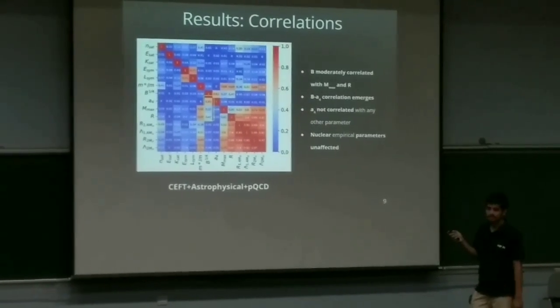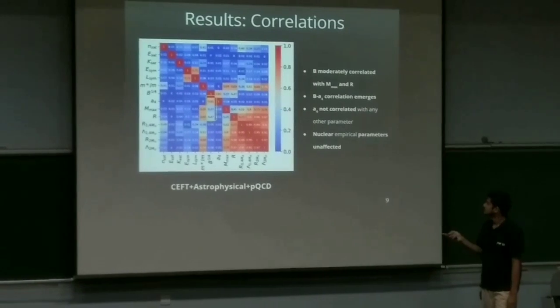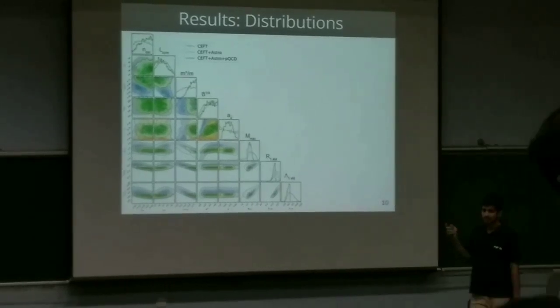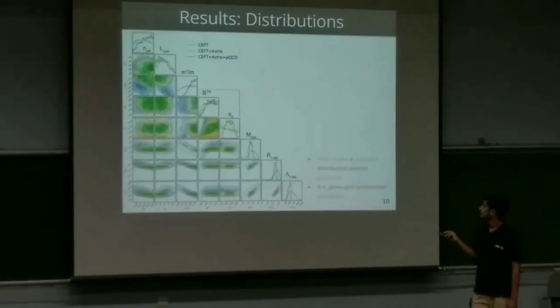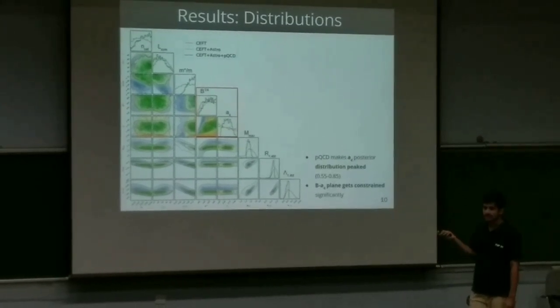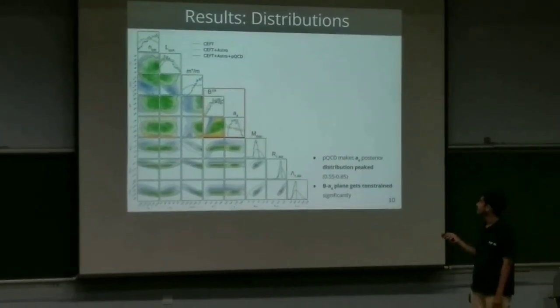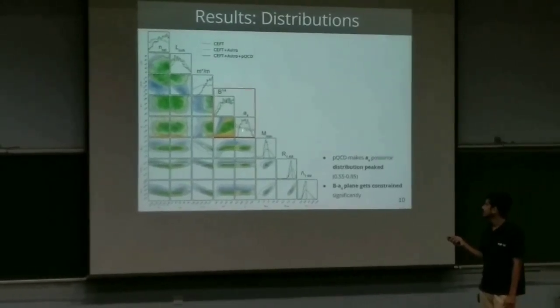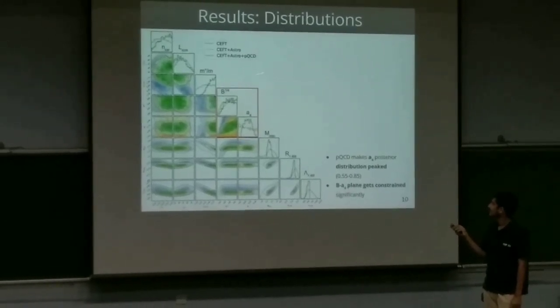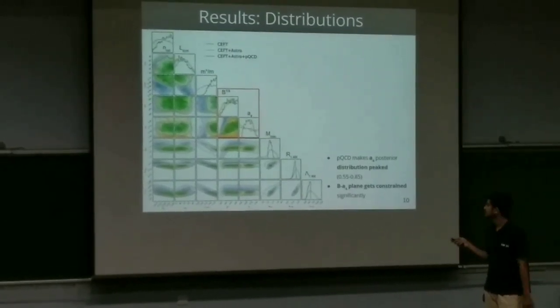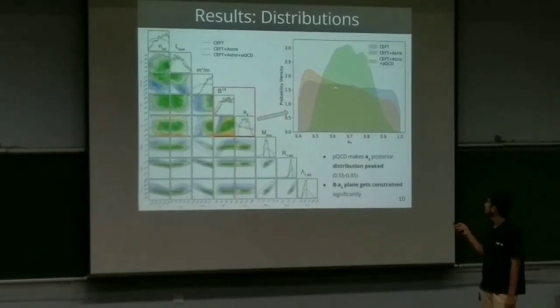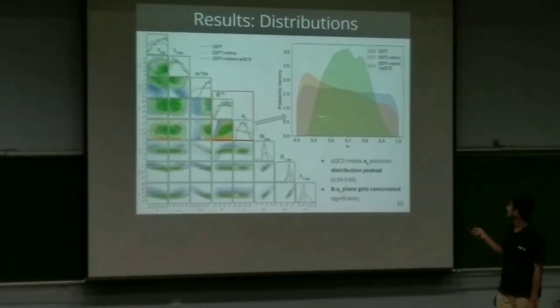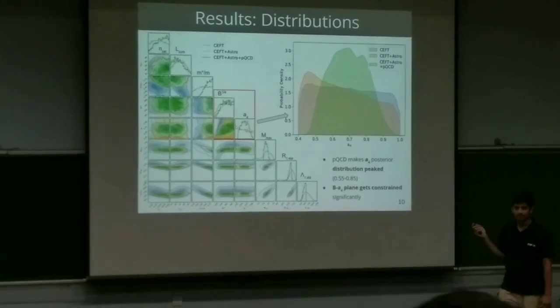These are the corner plot, the posterior distribution for some of the selected variables. I just focused on the quark sector; the rest are consistent with what we already know. One of the observations, if you see this a4 posterior distribution, it becomes peaked after the green is like, after adding the pQCD, it becomes peaked. So we have this blue which is more or less uniform like your prior. And after adding pQCD, it becomes constrained. So this is one of the observations that we have.